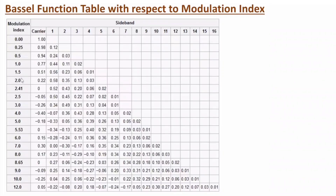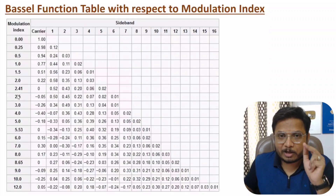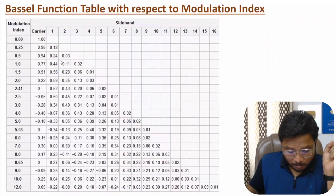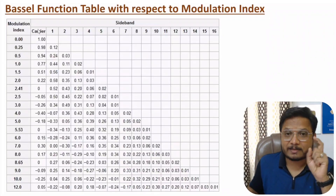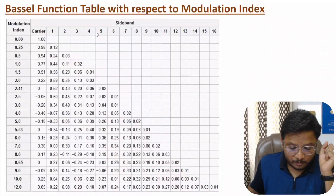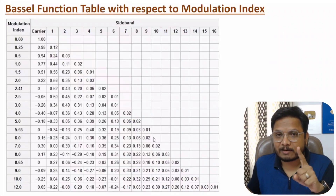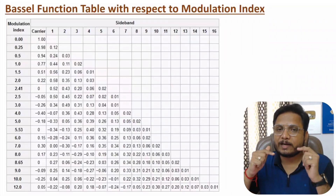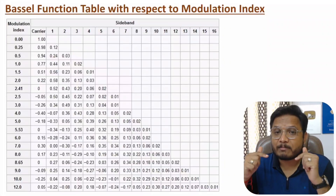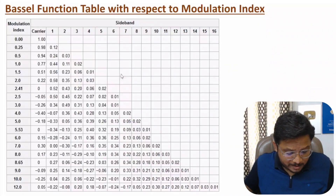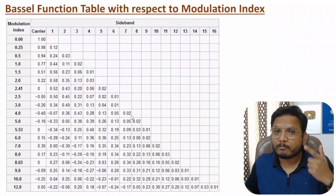In the Bessel function table, vertically we have the modulation index — for WBFM it is greater than 1. Horizontally we have the carrier coefficient J0, then J1, J2, J3, J4, J5, J6, and so on. As you increase the modulation index, the number of coefficients increases, and as the coefficients increase, the overall bandwidth increases. So with WBFM, a higher modulation index leads to wider bandwidth because more Bessel coefficients are added.